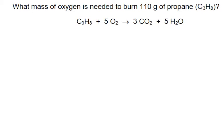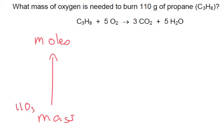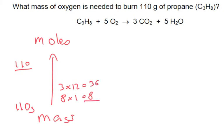What mass of oxygen is needed to burn 110 grams of propane? As always, we'll start with mass and go to moles. Our mass is 110 grams. Propane has 3 carbons and 8 hydrogens: 3 times 12 is 36, plus 8 times 1 is 8, giving a molar mass of 44. So 110 divided by 44 gives us 2.5 moles.